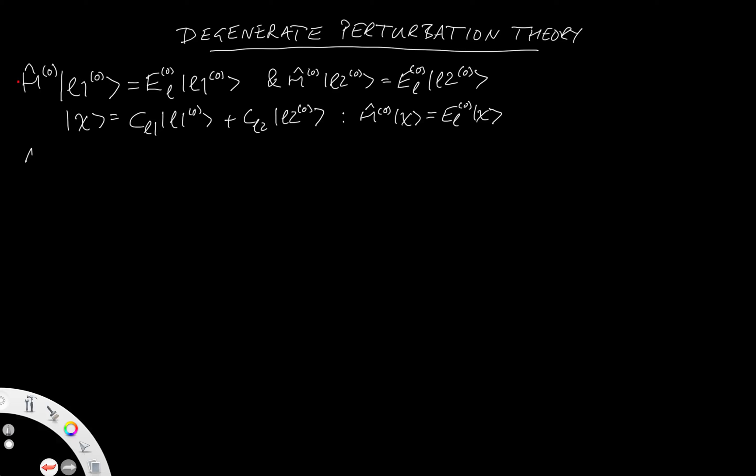So let's discuss that for a second. So after we perturb the system, we find that actually the states split. So after perturbing, we find that E_L1 does not equal E_L2. The states split.